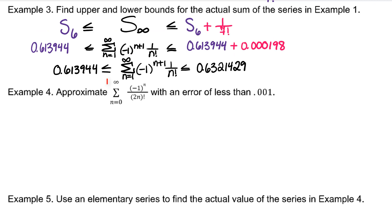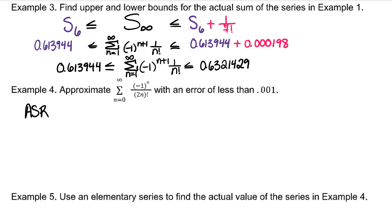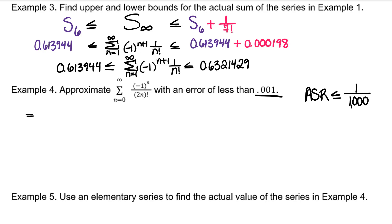For number 4, we're going to approximate this infinite series with an error of less than 0.001. So I want the alternating series remainder to be less than or equal to 1 over 1,000. Often AP will phrase this as: what is the fewest number of terms needed to make an approximation for which the error is less than or equal to 1 over 1,000? Let's begin by looking at the first few terms — plug in 0, 1, 2, 3. Each time I add or subtract, I'm getting closer to the actual sum. The alternating series remainder should be the first unused term, so I just need the first unused term to be less than or equal to 1 over 1,000.